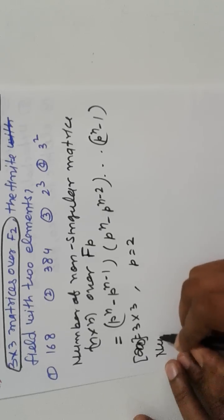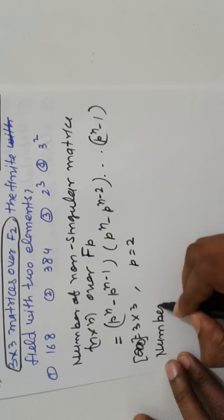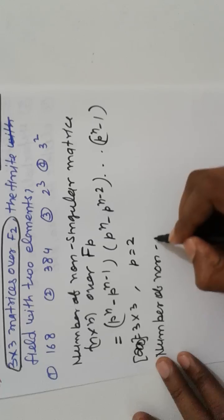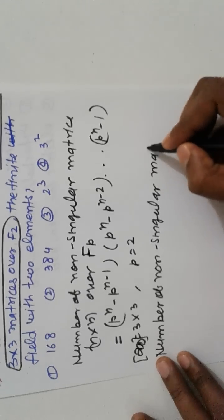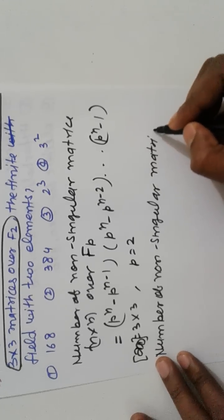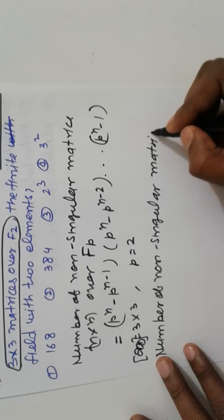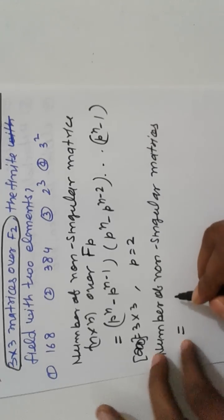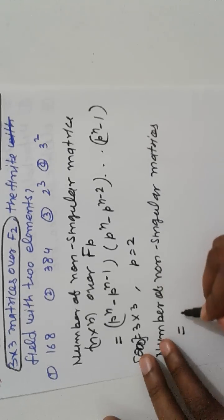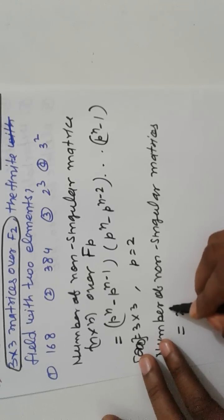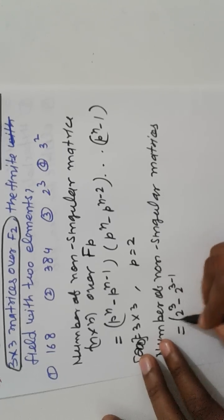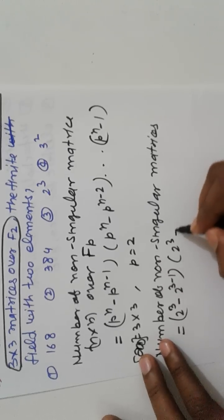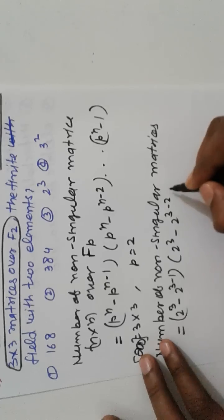So number of non-singular matrices n equal to. So first you write down this p raised to n minus 2, 2 raised to 3 minus 2 raised to 3 minus 1. Next n. So 2 3 to change, this p raised to 2 equal to 3 and